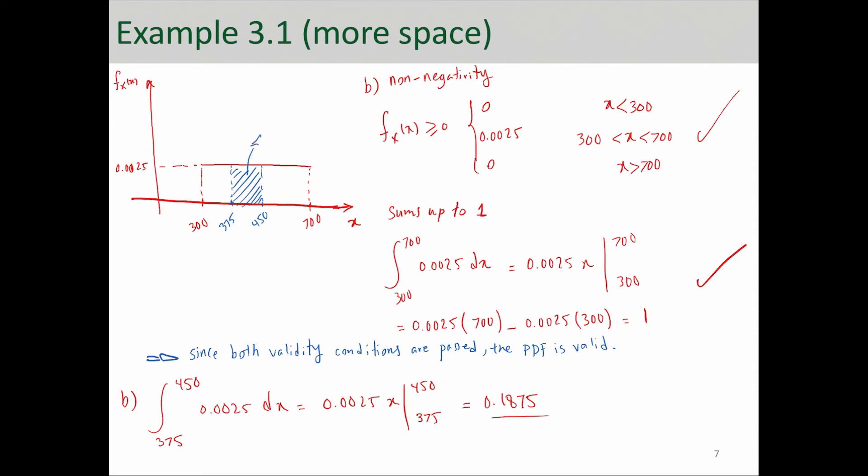And the probability that you're calculating is the area under the curve between 375 and 450. So, you could find the area by multiplying the width to the length and that would be your probability. So, 375 to 450 is 75 and here on this side, we have 0.0025.